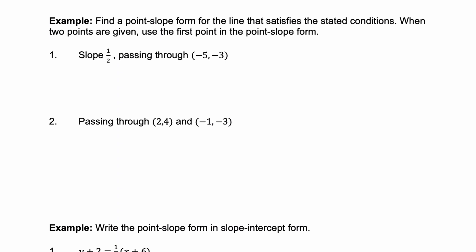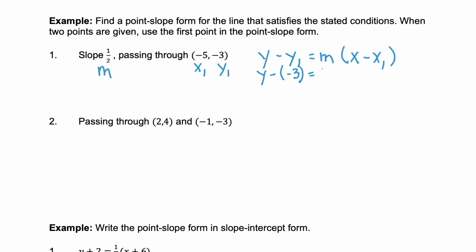Example one: we're given the slope and a point that our line passes through. The slope is our m, and the point is x1, y1. Substituting into y minus y1 equals m times x minus x1, we get y minus negative 3 equals 1/2 times x minus negative 5. Simplifying, y plus 3 equals 1/2 times x plus 5. There we have the point-slope form.